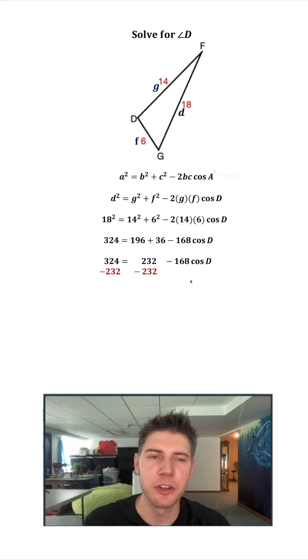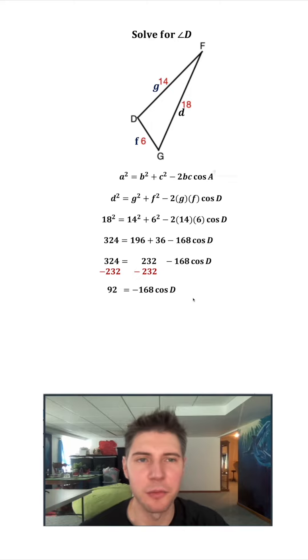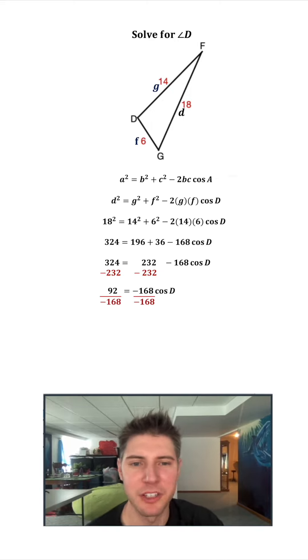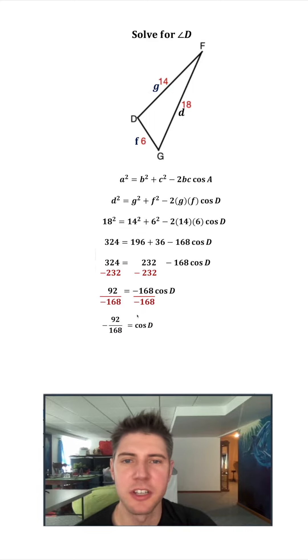So I'm going to subtract 232 from both sides. The left side, it gives me 92. This cancels, which just gives me the negative 168 cosine D on the right hand side. Now we divide both sides by negative 168. So these cancel. So it just gives me cosine D equals negative 92 over 168.